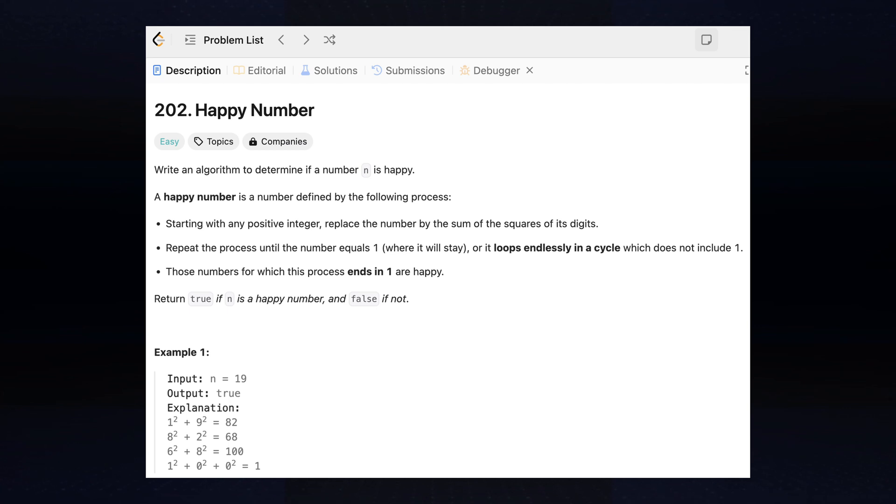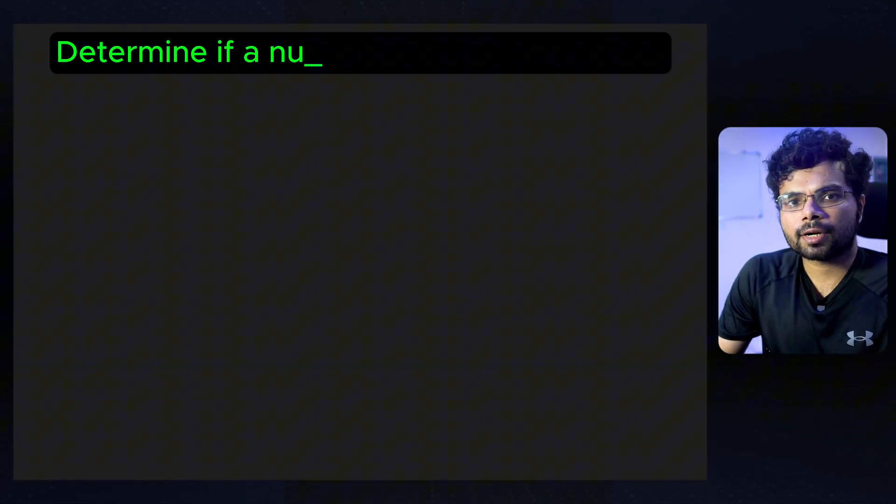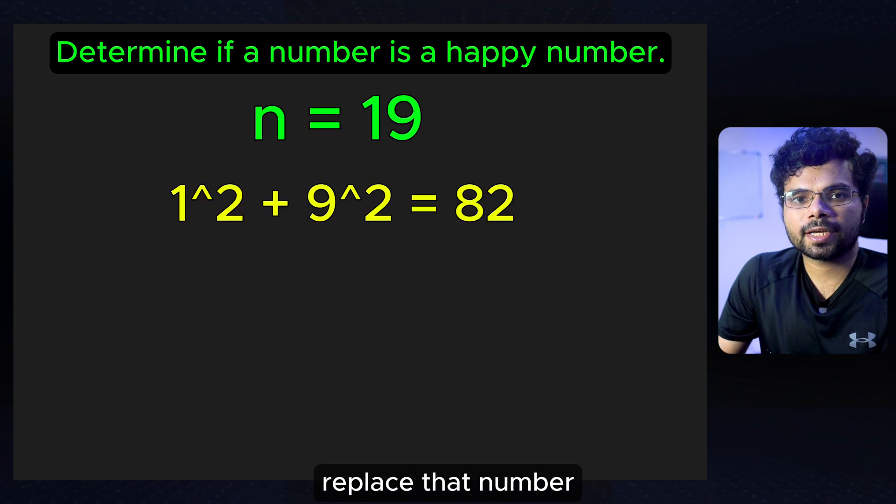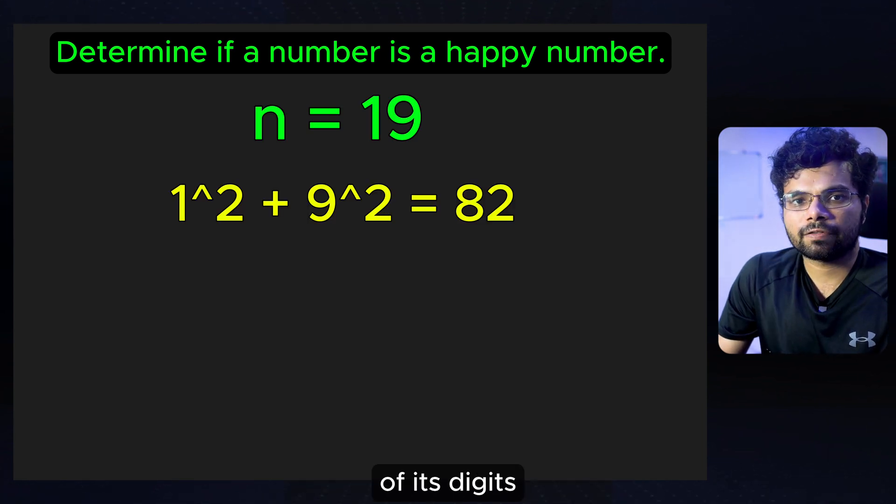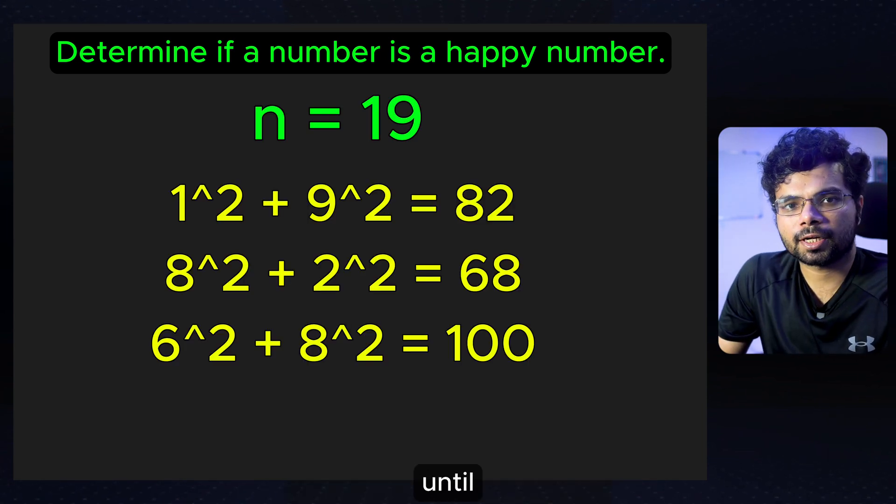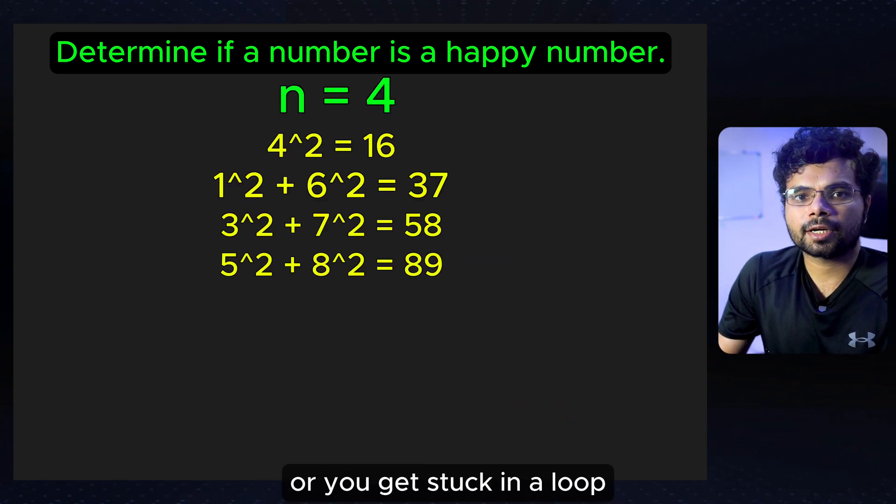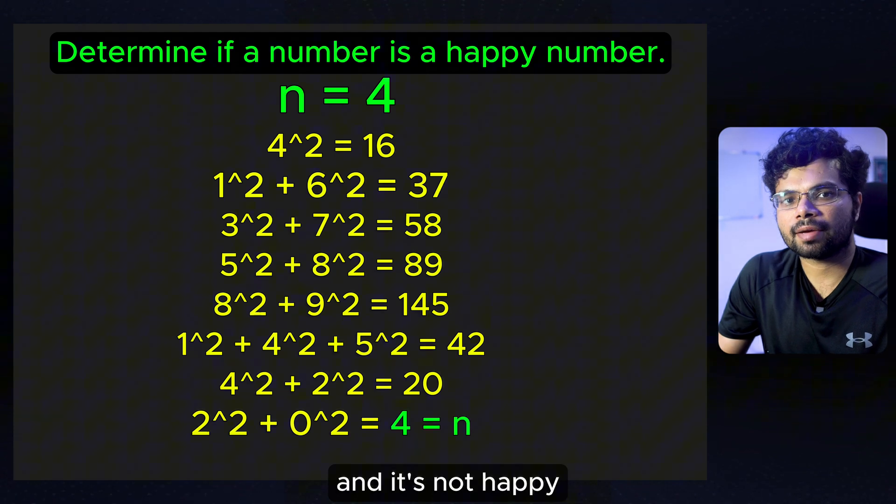Problem 3, LeetCode 202 Happy Number. The problem asks you to determine if a number is a happy number. Here is what makes a number happy. You start with a positive integer. Replace that number with the sum of the squares of its digits. Keep repeating this process until either you end up with 1, which means the number is happy, or you get stuck in a loop, meaning the number will never reach 1, and it's not happy.